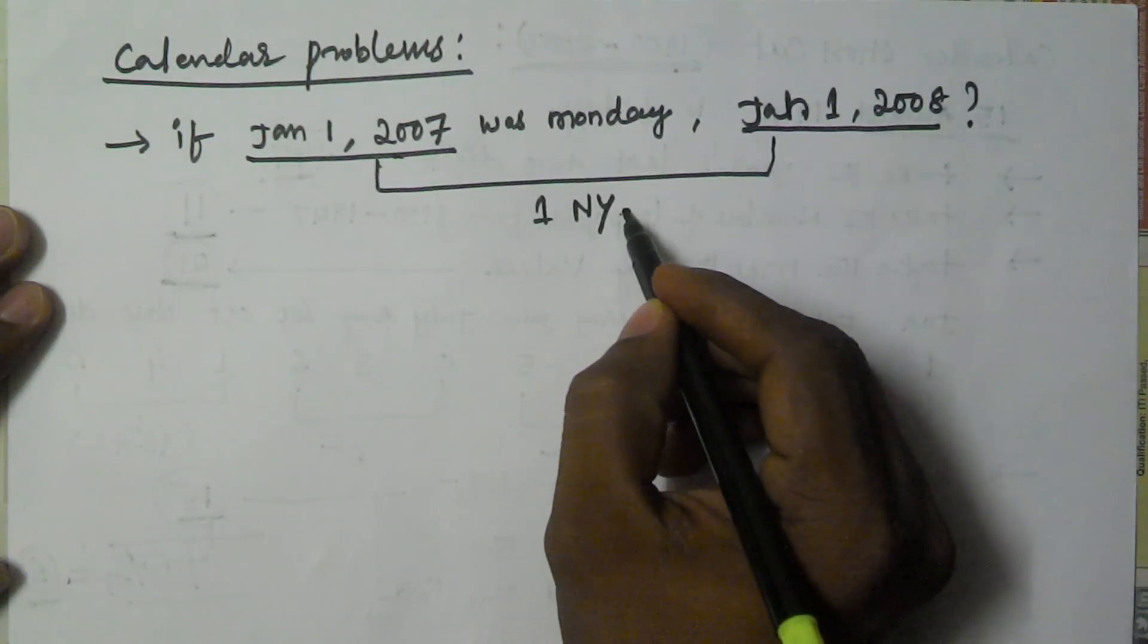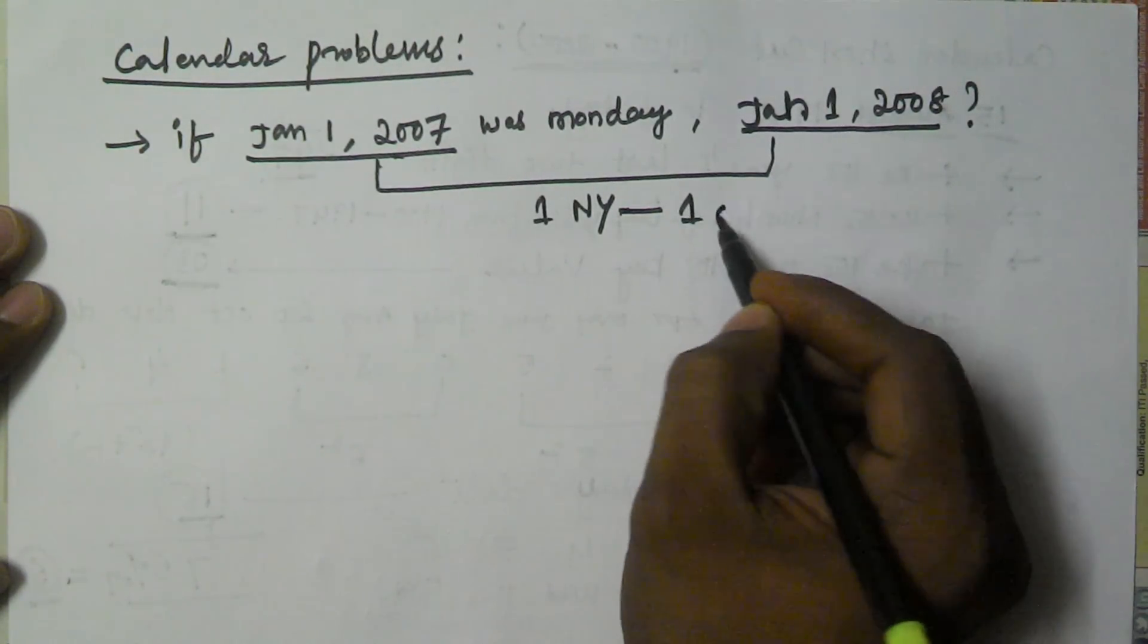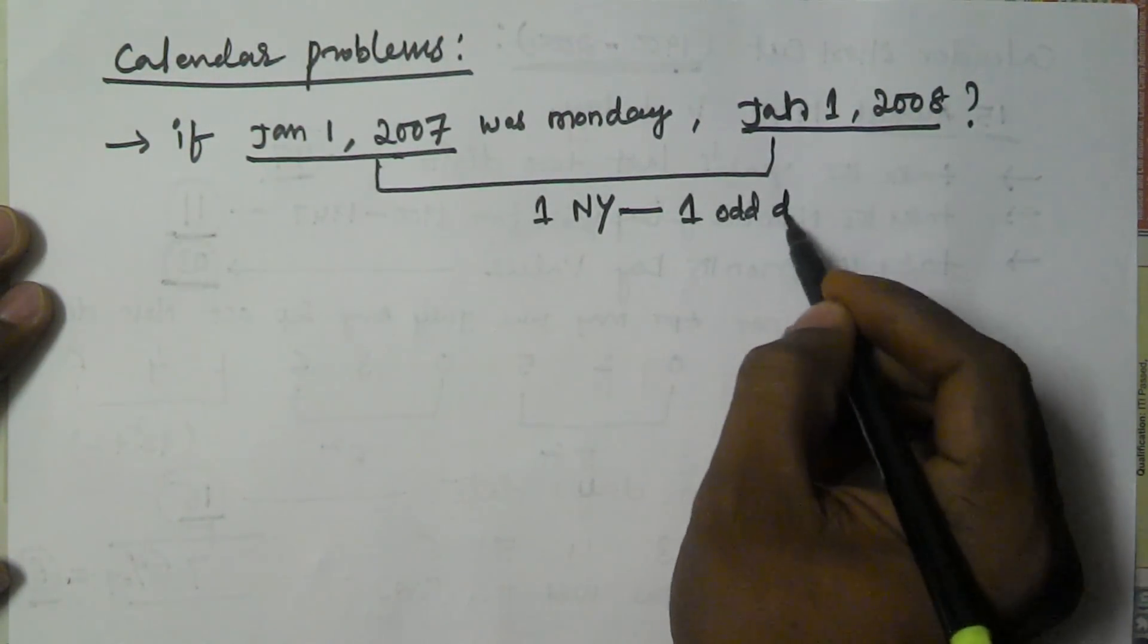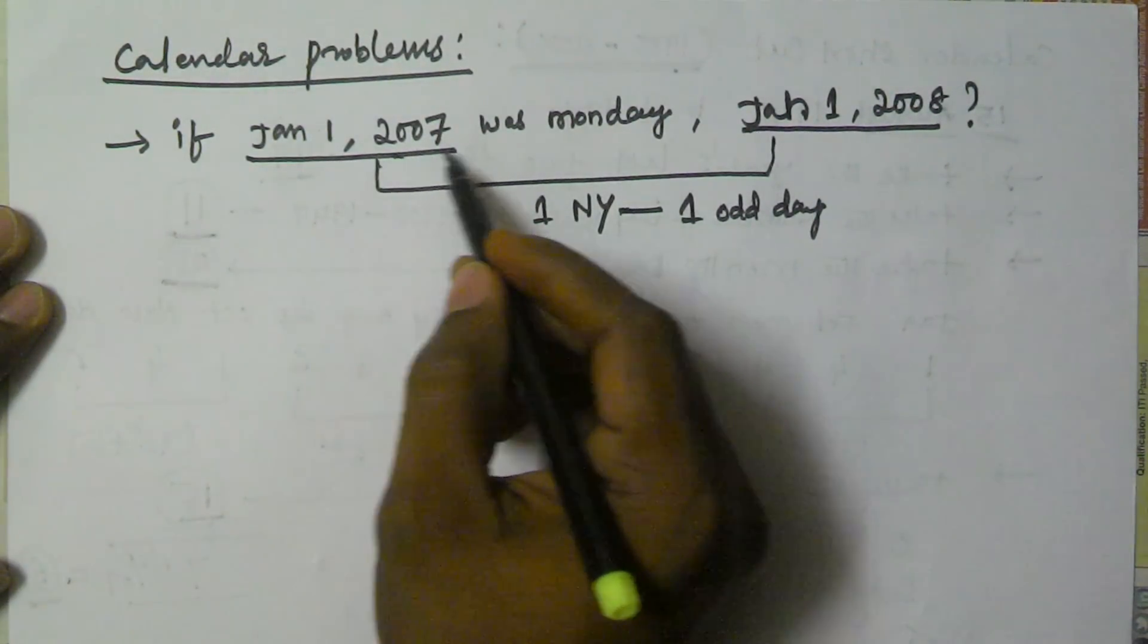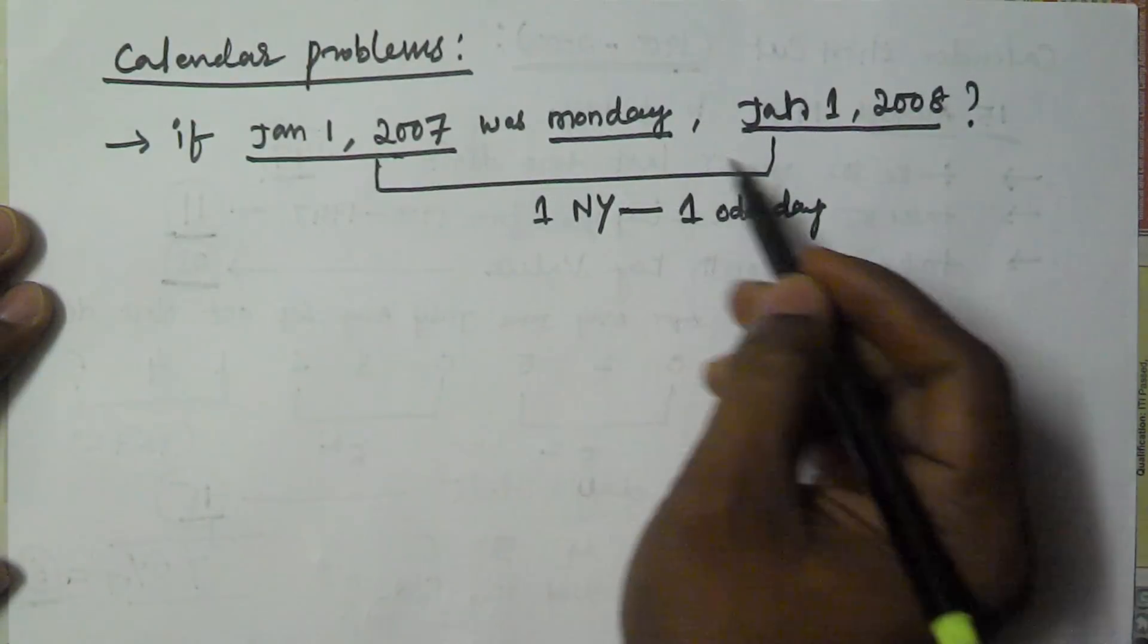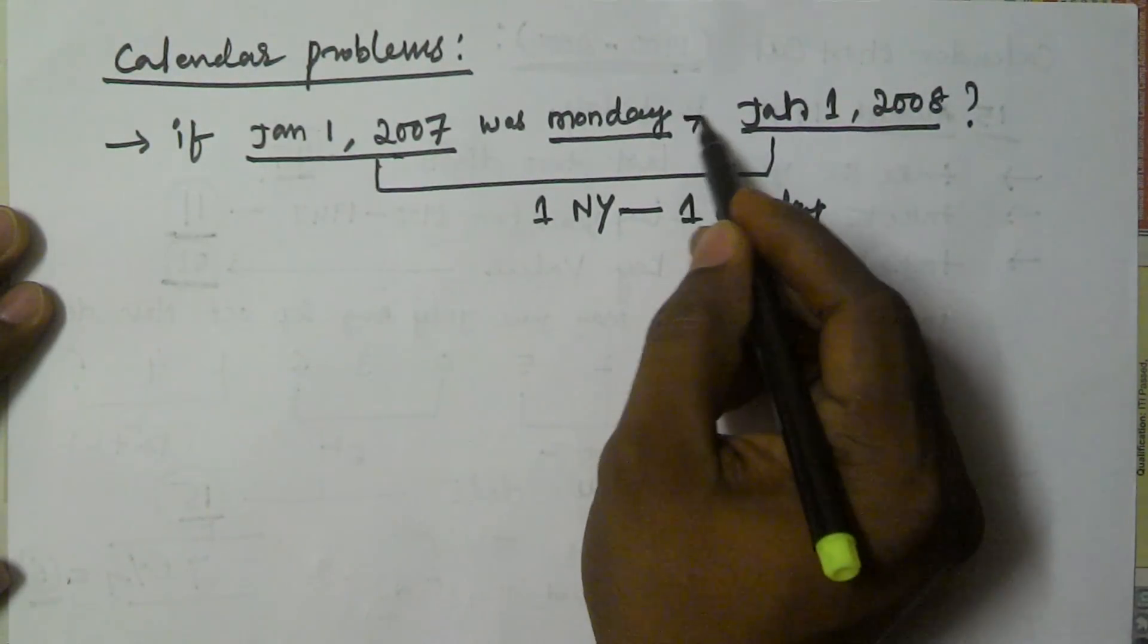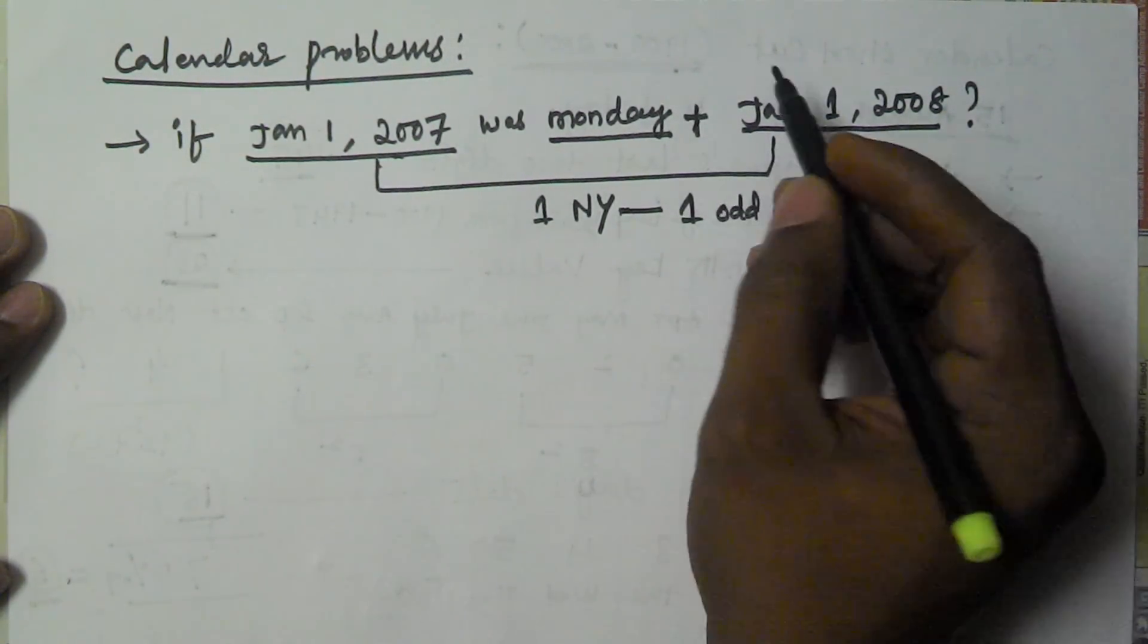So one normal year contains one odd day. One odd day. So that means January 1st, 2007 was Monday. So if we are adding one odd day, then it will become Tuesday.